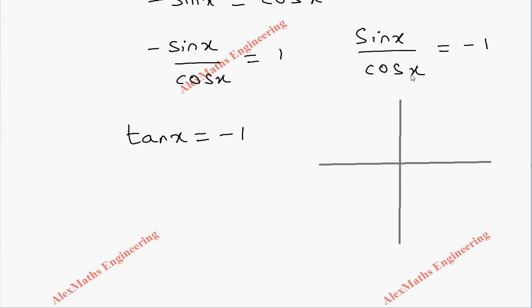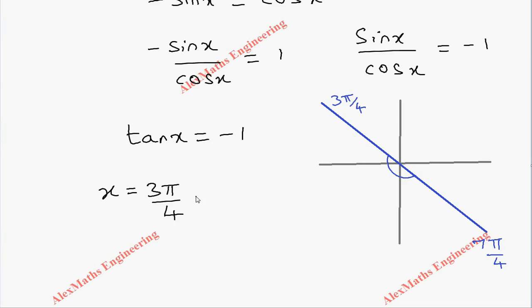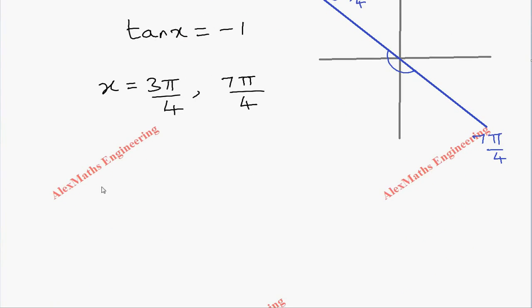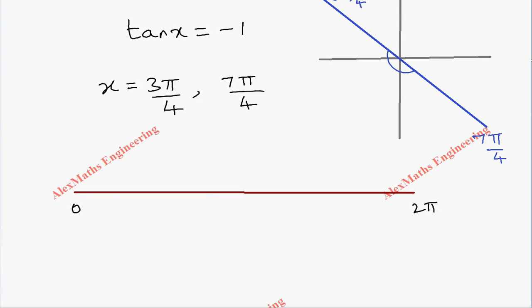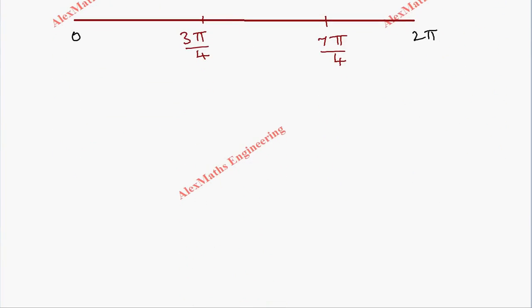When tan x = −1, x lies in the second and fourth quadrants. The values are x = 3π/4 and x = 3π/4 + π = 7π/4. We take a number line from 0 to 2π and plot 3π/4 and 7π/4, giving three intervals.